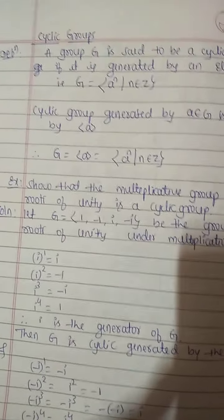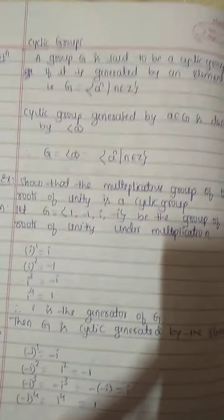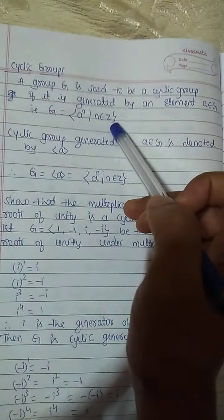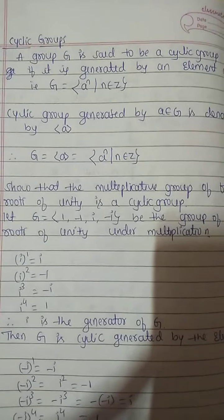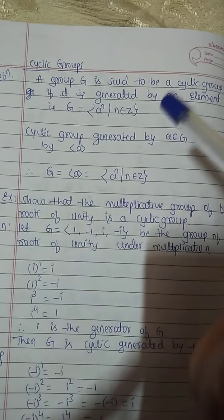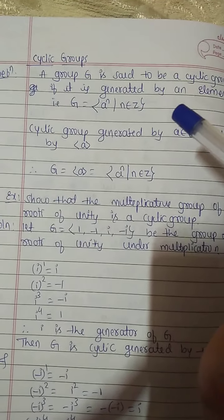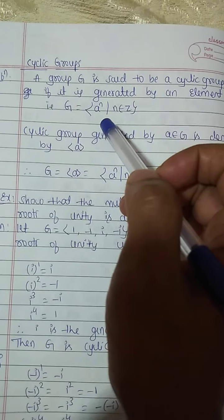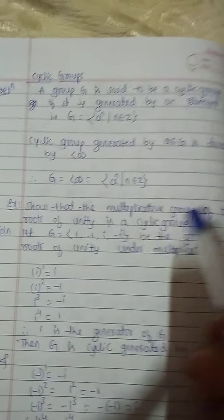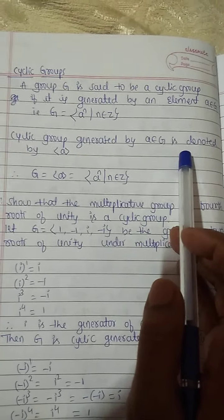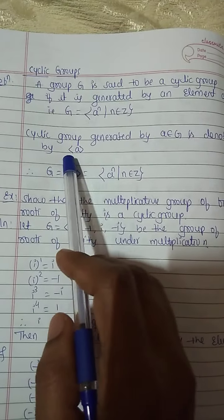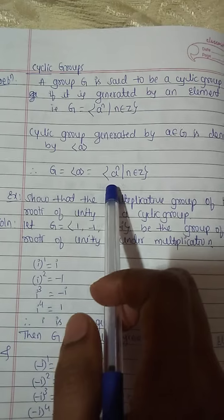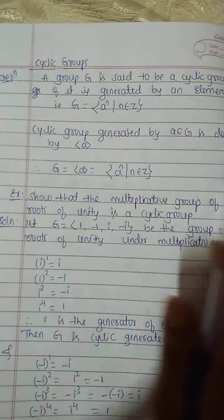Welcome back to class 7. In this class we are discussing cyclic groups. Group G is said to be a cyclic group if it is generated by an element A belonging to G. If any group is generated by a single element, then it is called a cyclic group. That is, G equals the set of A power N such that N belongs to Z. A cyclic group generated by A belongs to G is denoted by angle-bracket A angle-bracket, where A is a generator. Therefore, G equals generator A equals the set of A power N such that N belongs to Z.